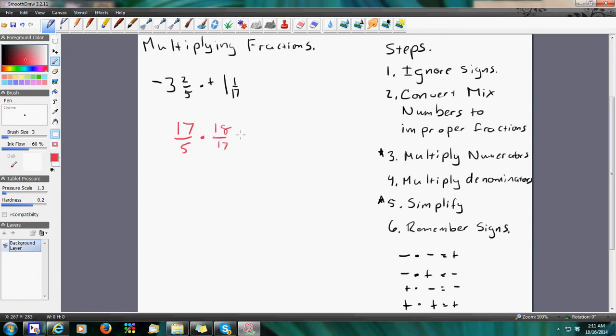And then it says multiply the numerators. Well, it is 2 o'clock in the morning, so my head's not exactly where it should be, but that's okay. I'm just going to add these quickly, 306. So I get 306 over 85. I'm going to erase this.